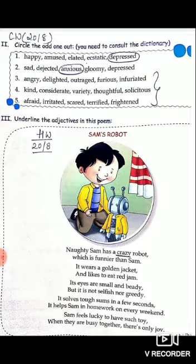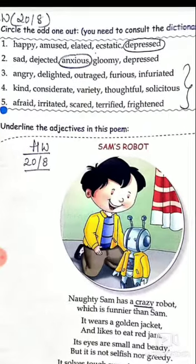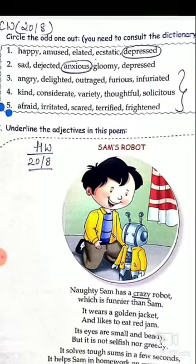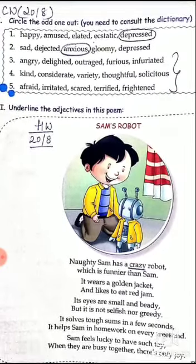Now let's try to understand what is to be done in exercise 2. Circle the odd one out. You need to consult a dictionary for that, children.